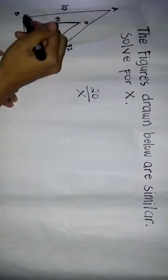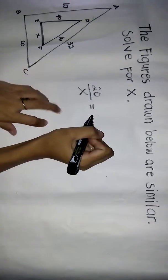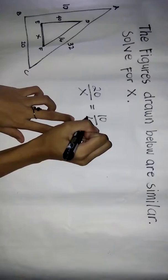Then, AB corresponds to DE, so we have 20 over X equals 10 over 40.